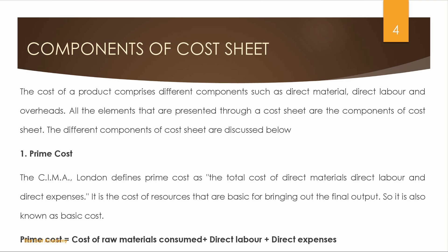The Prime Cost equation is: Cost of raw material consumed plus Direct Labor plus Direct Expenses. This gives us the Prime Cost.